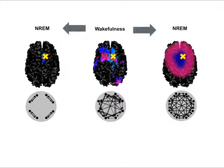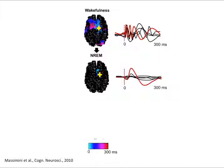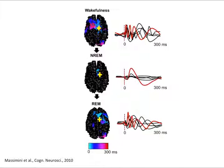Another interesting prediction is that the complexity of the cortical response to TMS should recover during dreaming — when the brain, albeit disconnected from the external environment, generates a conscious experience as vivid as during wakefulness. Here is the same subject during wakefulness, then in non-REM sleep showing the simple response, and then the response obtained while the subject was dreaming in REM sleep — showing a clear recovery of the spread and differentiation of the response, a recovery of the complexity of the spatiotemporal pattern.